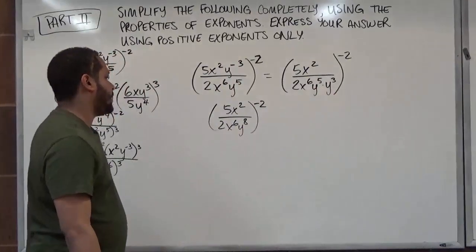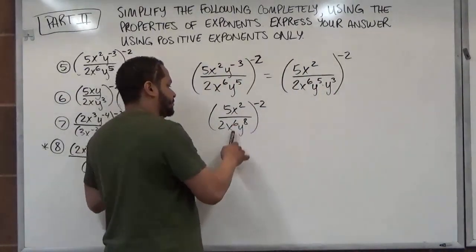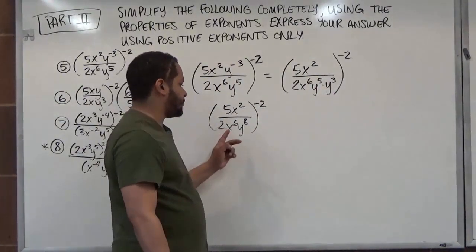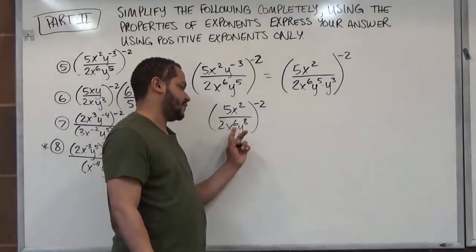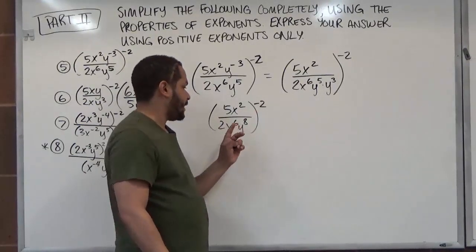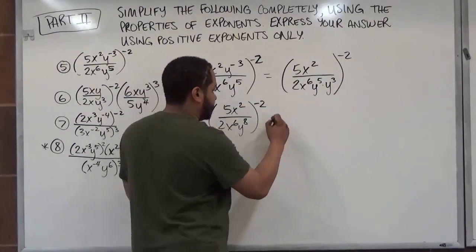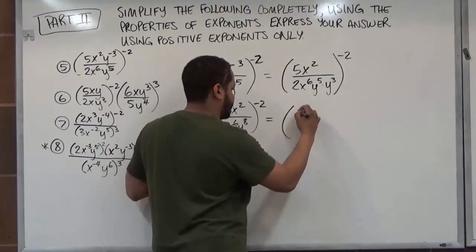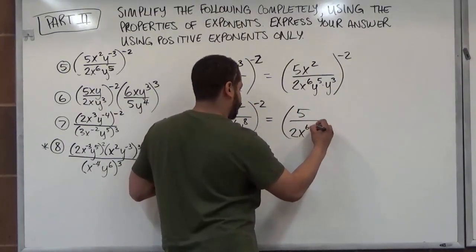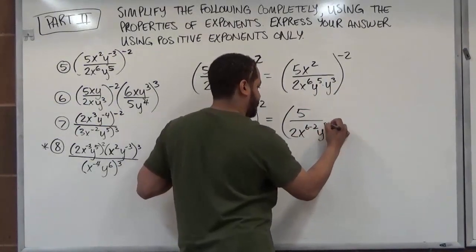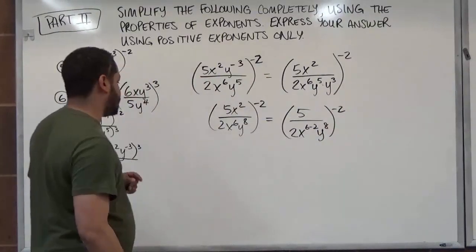So we have 5x squared over 2x to the sixth, y to the eighth — 5 plus 3 gives us 8. Now we want to simplify the x terms. Since the exponent of the denominator is greater than the numerator, we're going to subtract 2 from the denominator's power, moving x squared to the denominator. So what we get is 5 over 2x to the sixth minus 2, y to the eighth — and this is still to the power of negative 2.